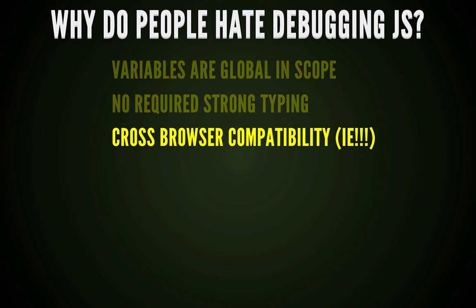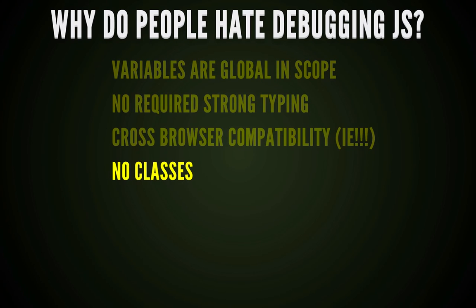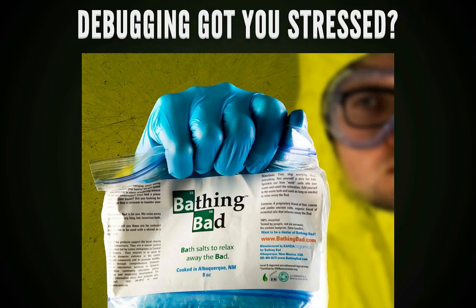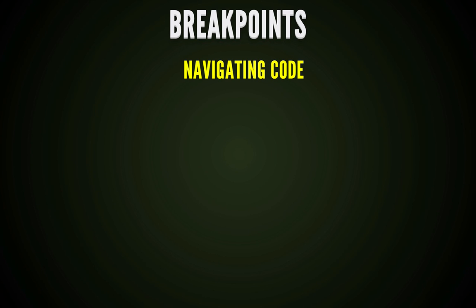Cross-browser compatibility — Internet Explorer especially — causes many issues. Other languages compile down and work on anything, but JavaScript has cross-browser and cross-device issues. Also, there's no per se built-in class system, though you can create classes using different methods. Breakpoints are the quickest easy way to navigate your code. There are standard breakpoints and conditional breakpoints.